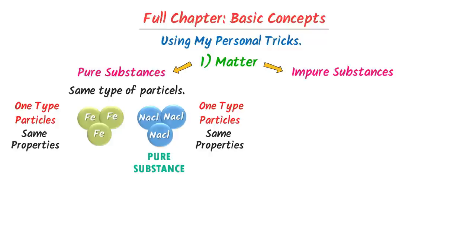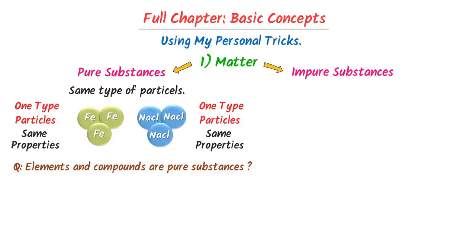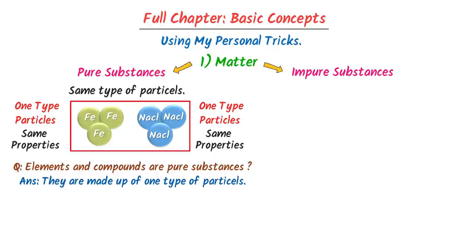Here's an important exam question: why are elements and compounds called pure substances? The answer is simple — they are both made up of one type of particles. So we say that elements and compounds are pure substances.